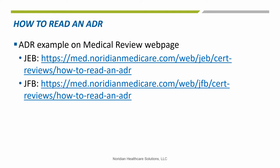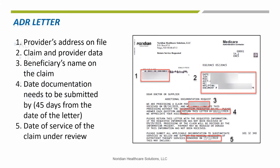Noridian Medical Review has an illustrated example of an ADR letter on their webpage. Provided here are the links to the JE and JF pages. The screenshot of an ADR letter shows some of the elements on the demand letter: provider's address on file, date, claim number, patient ID number, beneficiary name, NPI/PTAN, the date documentation needs to be submitted to Noridian (45 days after the date of the letter), dates of service, the MR email address, and procedure codes.